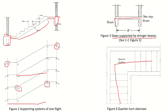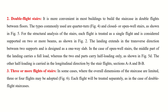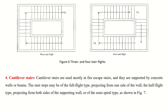There are also three or more flight stairs. For example, a three-flight stair has a first, second, and third flight with quarter landings and full landings. A four-flight stair has four flights with all quarter landings.